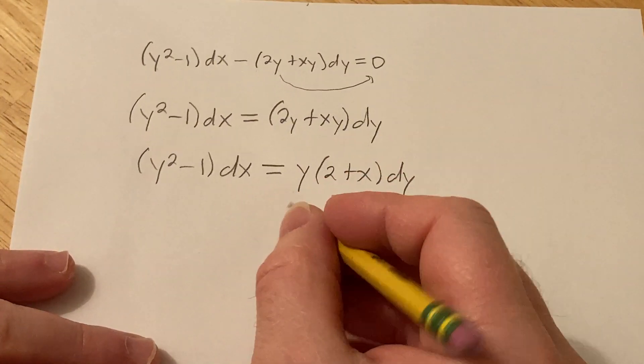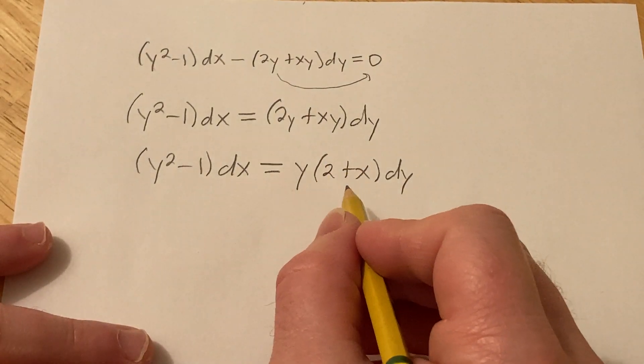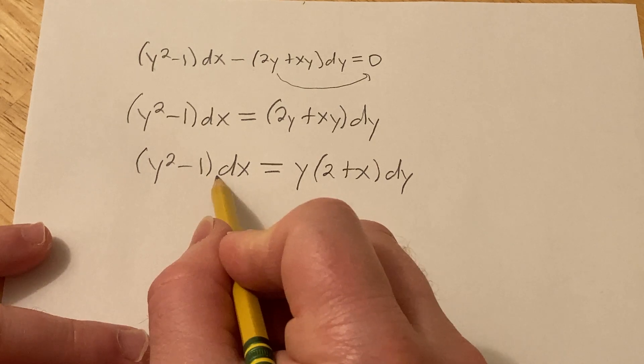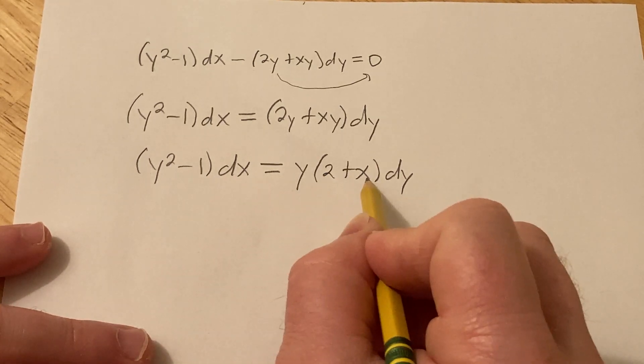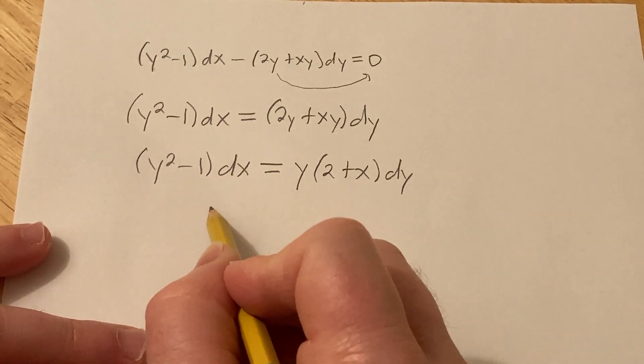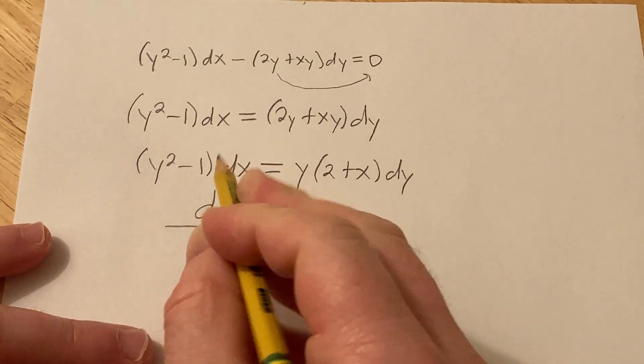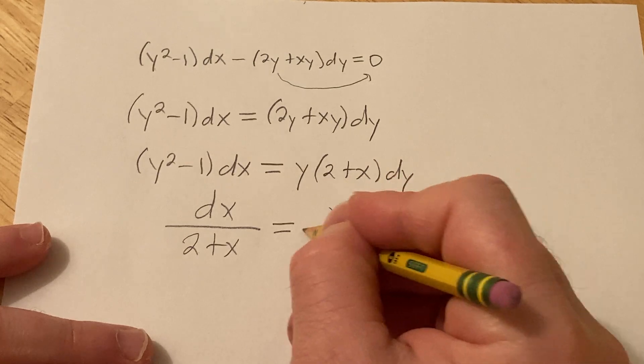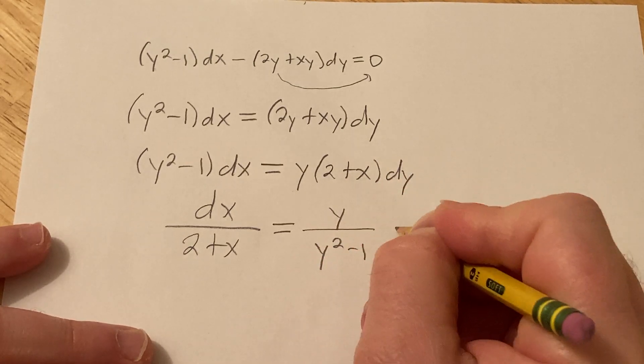So we want to get all the y's on one side and all the x's on the other. So basically I'm going to divide by y squared minus 1 and divide by 2 plus x. So this is going to come over here and we'll have dx over 2 plus x equals, and then here we're going to have y over y squared minus 1 dy.